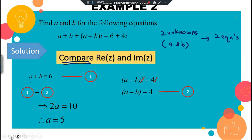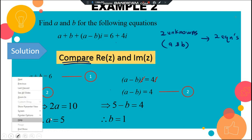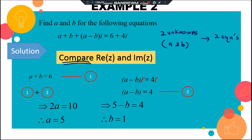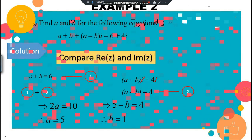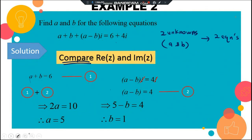So a equals 5. Substituting back into a minus b equals 4: 5 minus b equals 4, so b equals 1. Our final answer is a equals 5 and b equals 1.